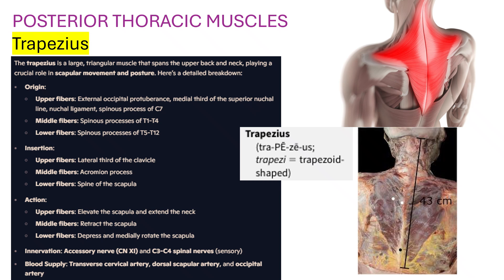Origin — upper fibers: external occipital protuberance, medial third of the superior nuchal line and nuchal ligament, spinous process of C7. Middle fibers: spinous processes of T1–T4. Lower fibers: spinous processes of T5–T12.